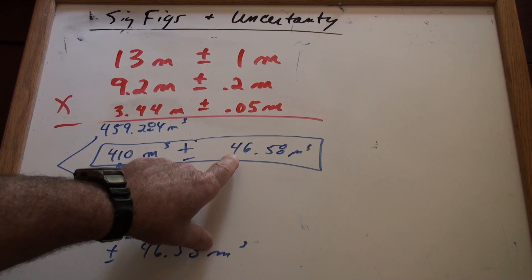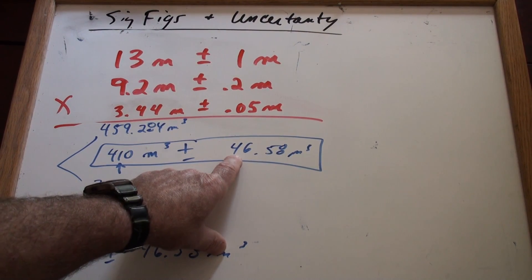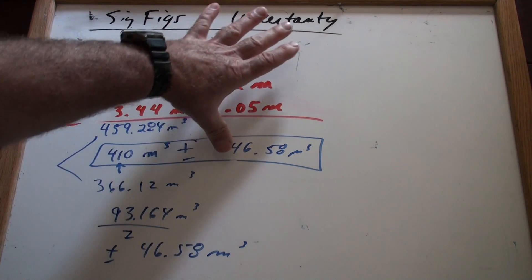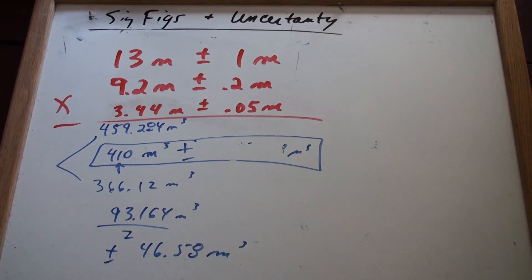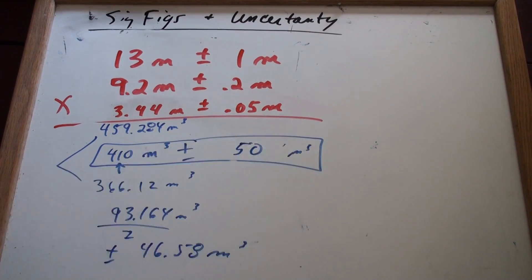because now you're saying the guess here is the tens place, but over here you're good to the hundredths place. So you have to round this answer off to agree with where you had to round that off. So, how do you round this off to the tens place? It could be either 40 or 50. So, because this is bigger than 4.999999, this turns into 50. So, it's plus or minus 50 cubic meters. Okay?